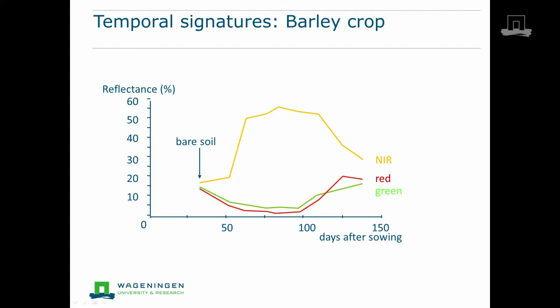After day 100, the crop starts to mature. The green, and particularly red, reflectance increase to values comparable to that of bare soil. The near infrared reflectance starts to decrease at the end of the growing season because of this decreasing amount of green biomass.